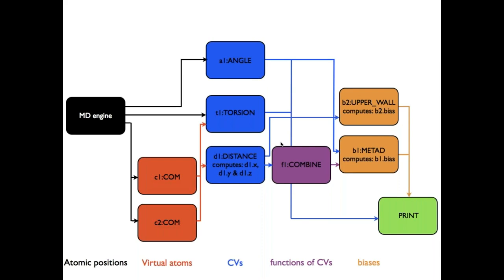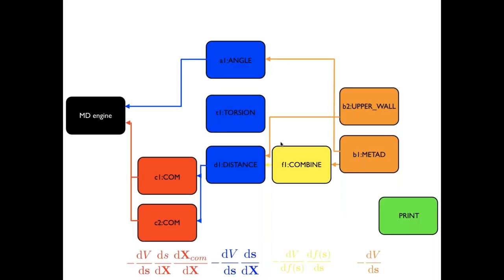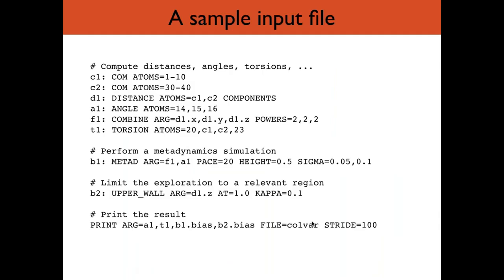This is not the end of the story. We have a loop where you go forward through the list of actions, calculating biases that depend on functions of collective variables and virtual atoms. Because we're applying forces onto atoms, we also need to calculate the derivatives of all these quantities so that we can apply forces backwards through the code using the chain rule. Going backwards, we take our biases, calculate the negative derivative of the potential — which is the force — with respect to the collective variables, and propagate the derivative back through inputs, eventually getting the forces to apply on atoms in the MD code.